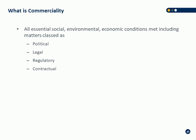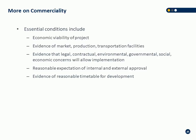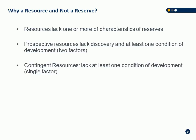Essential conditions for commerciality: it has to have positive economics; you have to have evidence of market, production, and transportation facilities; reasonable expectation that it's going to be approved by both government agencies and internal company controls; and evidence of a reasonable timeframe for development. The defining difference between reserves and resources is risk. Reserves have no risk associated with them — they have uncertainty, but no risk. There's no binary switch, no chance of failure with reserves. There is a chance of failure for both prospective and contingent resources.